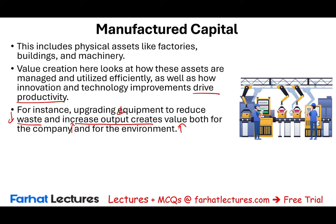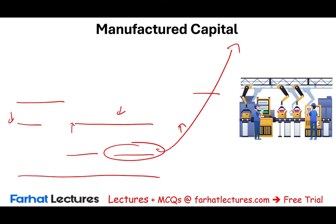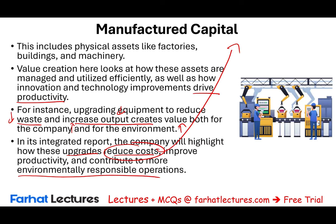If you're a company like Google or Facebook, you don't manufacture anything, so you don't have manufactured capital. In their integrated report, the company might highlight how upgrades reduce cost, improve productivity, and contribute to more environmentally responsible operations — and how reducing cost will improve the financial capital. So all these capitals are interrelated; one thing leads into the other.